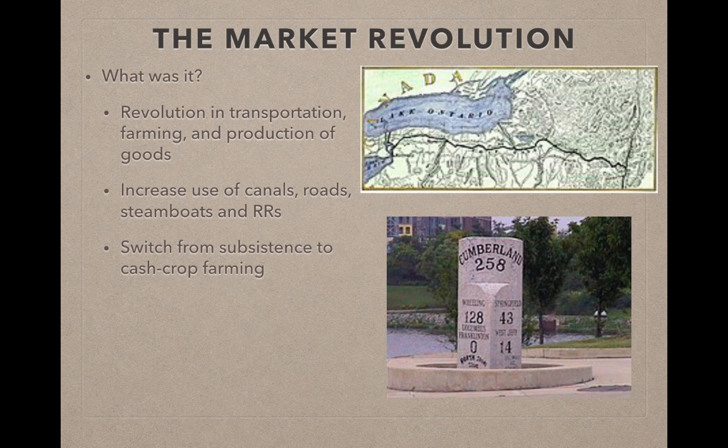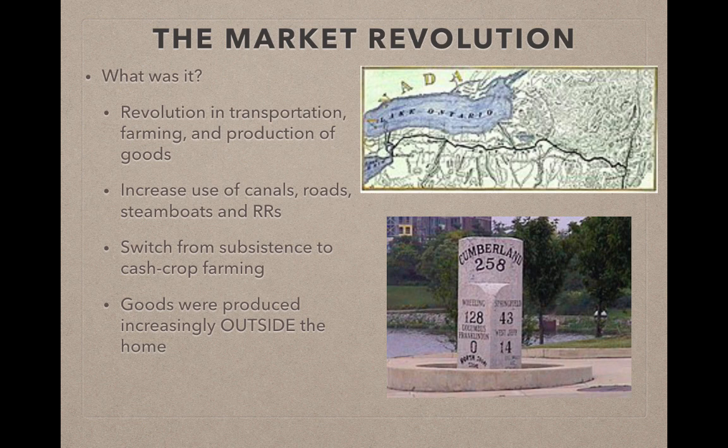More farmers are growing food to sell, not necessarily just to grow for themselves to live off of. Goods were produced increasingly outside the home, and this is especially true for textiles — the idea that goods are no longer being made at home, they're being made outside at places like factories. This occurs prior to the Civil War.